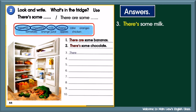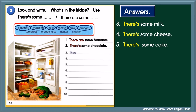4. Cheese — countable or uncountable? Yes, uncountable. So, begin your sentence with there's some. There's some cheese. 5. Cake — cake can be both countable and uncountable depending on how it is used. Here, we use there's some because the noun cake is in the singular uncountable form. There's some cake. 6. Oranges — countable plural noun. So, start with there are some. There are some oranges.